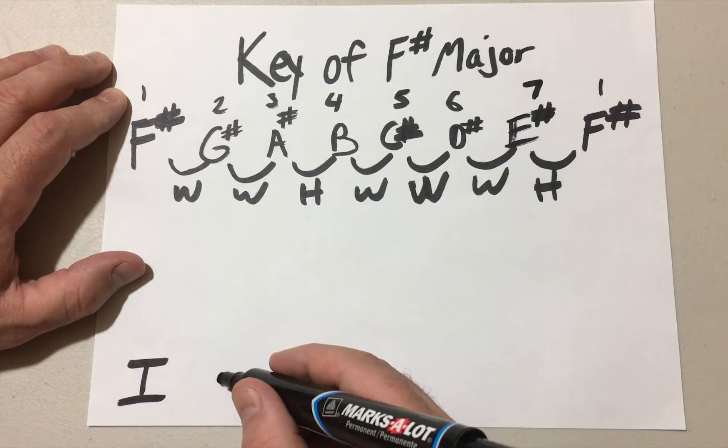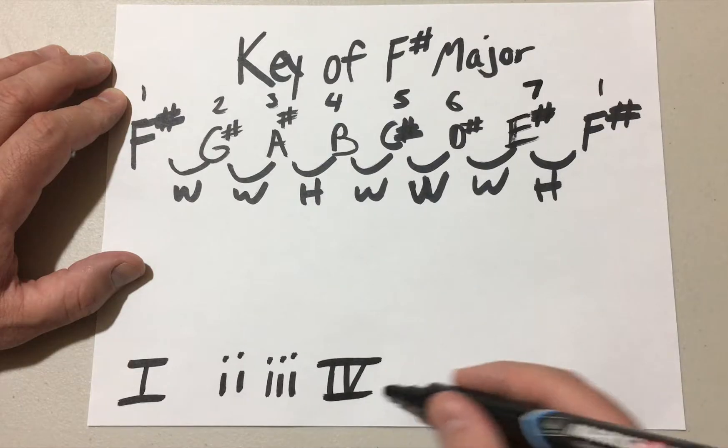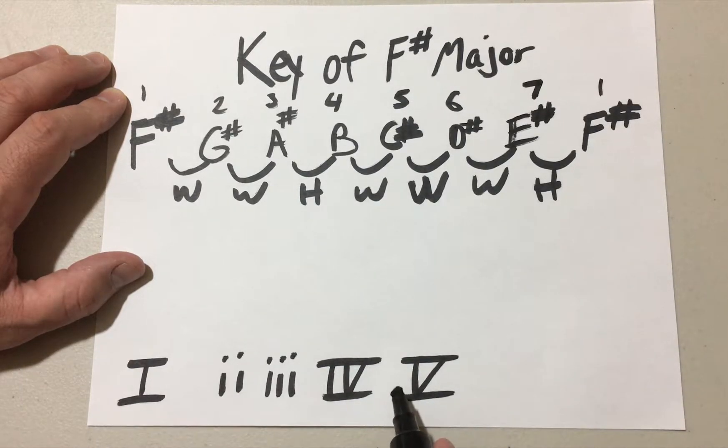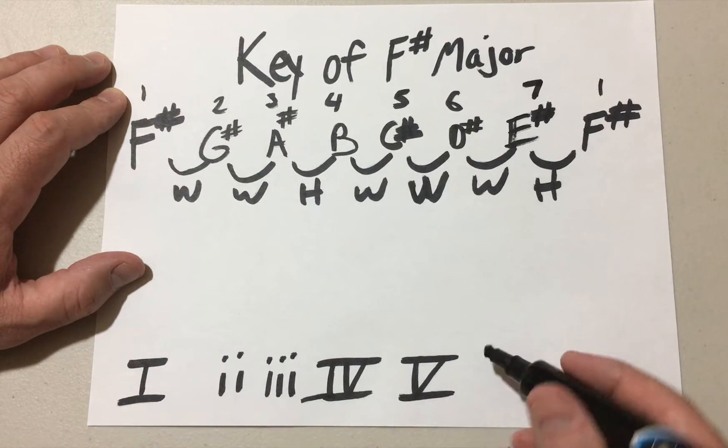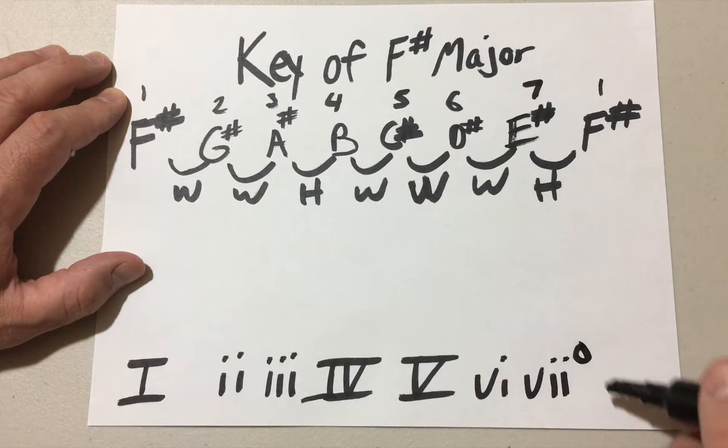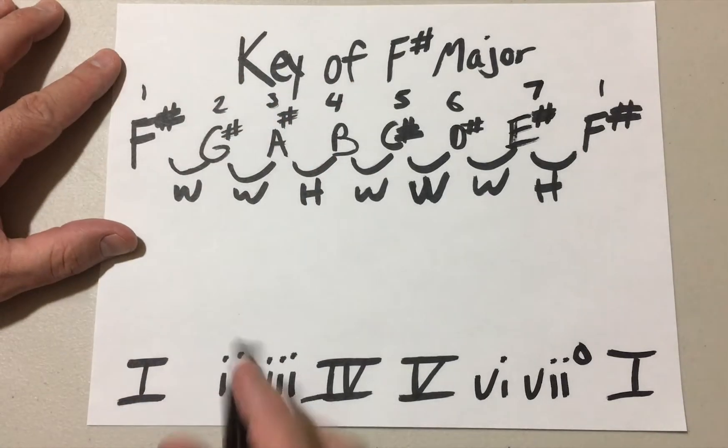And then basically once we have this, we can say the one chord. So let's do our things down here. The one, the four, and the five are major. These capitalized Roman numerals indicate that these are major chords. The two, the three, and the six are minor, and the seven is diminished.